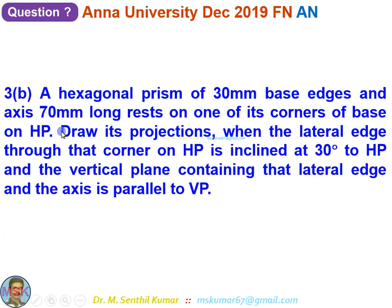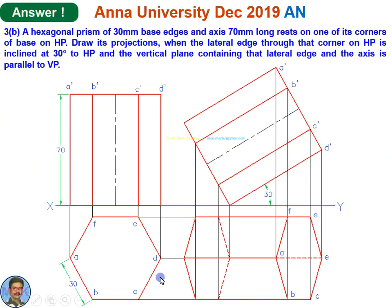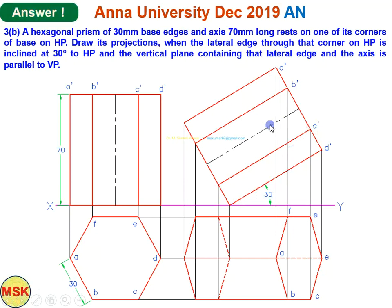A hexagonal prism of 30 mm base edge, axis 70 mm, rests on one of its corners of the base on HP. Draw its projections when the lateral edge through that corner on HP is inclined at 30 degrees with HP and the vertical plane containing that lateral edge and the axis is parallel to VP. Start from the top view, get the corresponding front view. Tilt this front view such that the lateral edge is inclined at 30 degrees. Then draw projectors and horizontal lines to get all six top face points and six base points. At this position, one face is completely visible; the lines connecting the opposite corner are hidden — three lines.